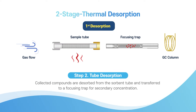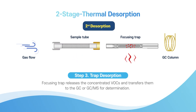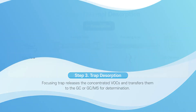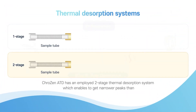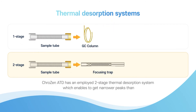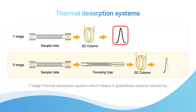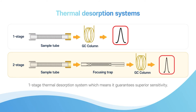Step two: tube desorption — collected compounds are desorbed from the sorbent tube and transferred to a focusing trap for secondary concentration. Step three: trap desorption — the focusing trap releases the concentrated VOCs and transfers them to the GC or GC-MS for determination. Crozen ATD employs a two-stage thermal desorption system, which enables narrower peaks than a one-stage system, guaranteeing superior sensitivity.